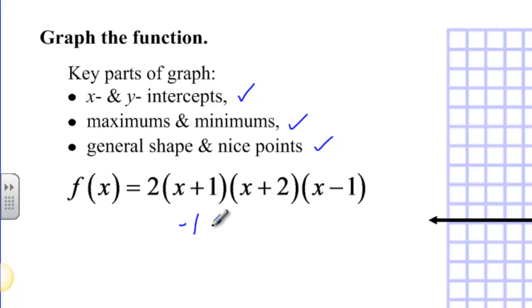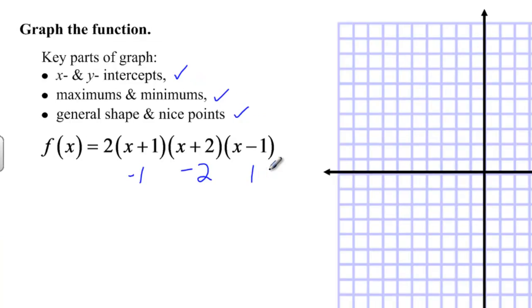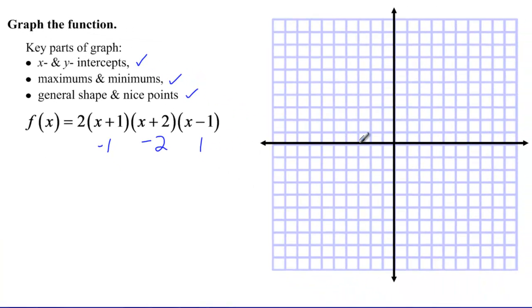I know right now that negative one, negative two, and one are my zeros, and since they're also my zeros, they're also my x-intercepts. So I'm going to go ahead and plot those on the graph.